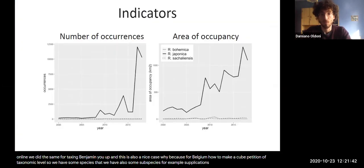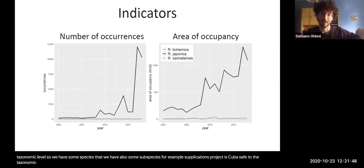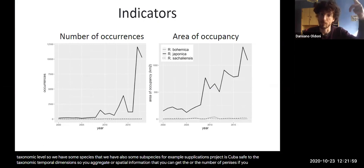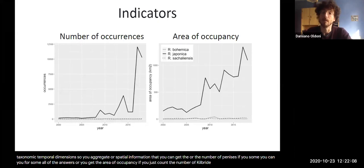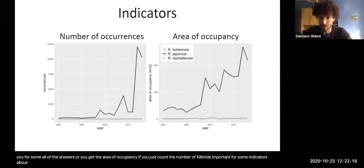Some applications. Well, if you project this cube, let's say, to the taxonomic temporal dimensions, so you aggregate all spatial information, then you can get the number of occurrences. If you sum all of the occurrences, or you get the area of occupancy, if you just count the number of occupied grid cells. So this is quite important for some indicators about the area of occupancy, specifically for protected areas for example.